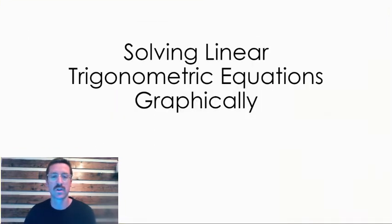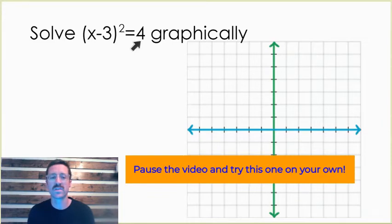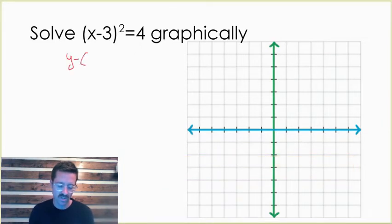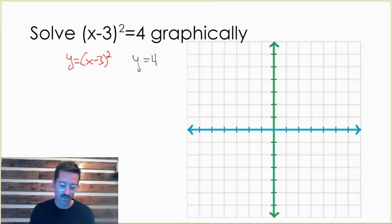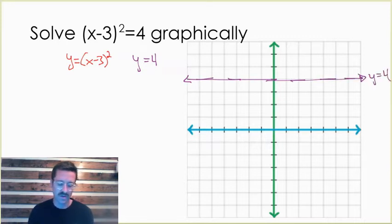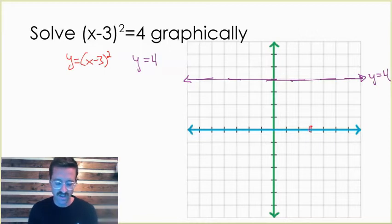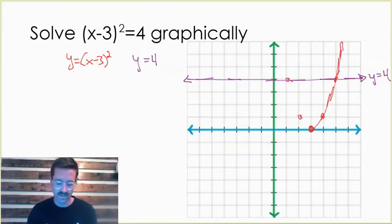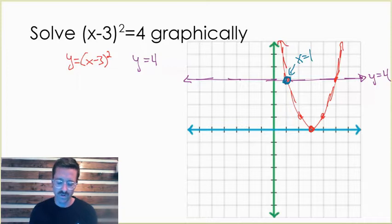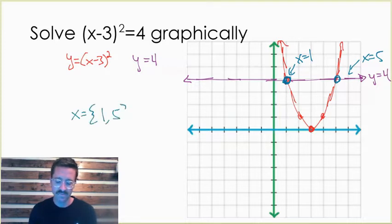Now let's look at a quadratic equation. We're really looking at two different functions: a quadratic function, which is x minus three squared, and a linear function, y equals four. If I graph these and see where they intersect, we'll know the solutions. The quadratic is the parent function shifted to the right three units, so that parabola looks like this. We actually have two solutions: x equals one and x equals five, giving us a solution set of one and five.